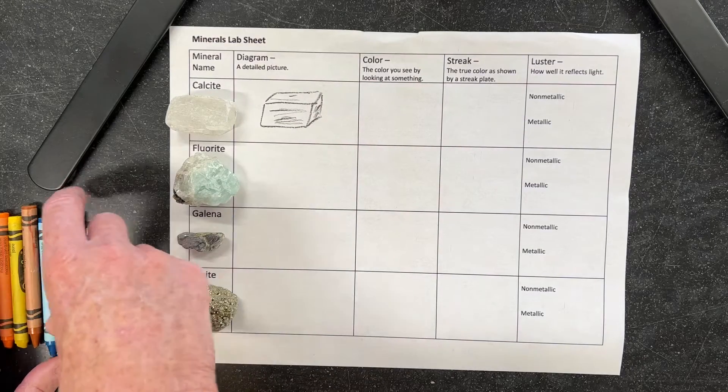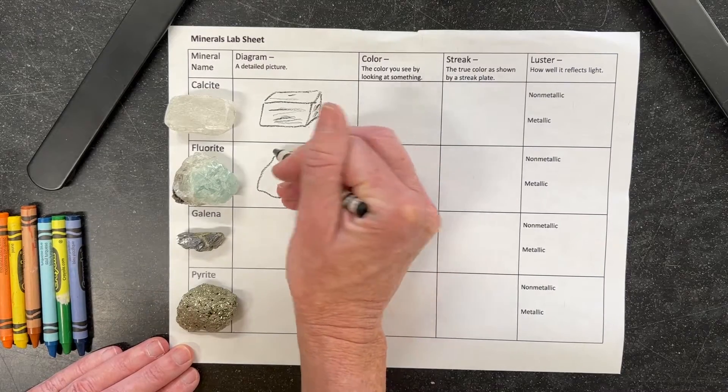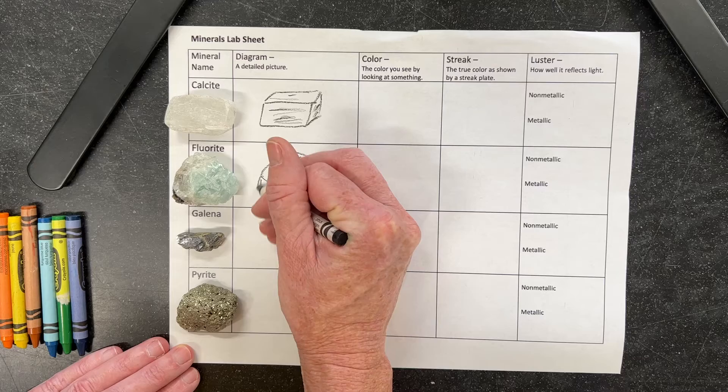Fluorite has kind of a greenish blue and white, so I'm going to outline it in black. Draw some details.